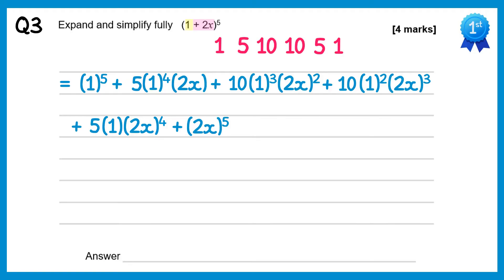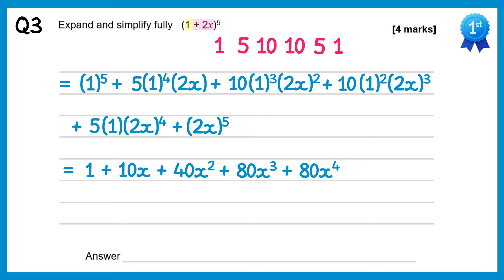Now we simplify: 1 to the power 5 is just 1. 5 times 1 to the power 4 is just 5, and times 2x is plus 10x. 2x all squared is 4x squared, times 10 gives plus 40x squared. 2x all cubed is 8x cubed, times 10 gives plus 80x cubed. 2x to the power 4 is 16x to the power 4, times 5 gives plus 80x to the power 4. And 2x all to the power 5 is 32x to the power 5.